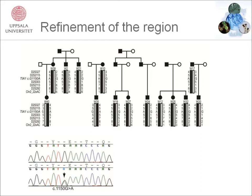It could be seen to segregate within the families and was confirmed in all patients. The variant is a G to A transition in the TIA1 gene.